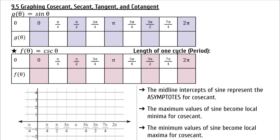Today we're going to learn how to graph cosecant, secant, tangent, and cotangent. Remember sine? Use the unit circle, or your notes from 9.4, to fill out the table and then graph.